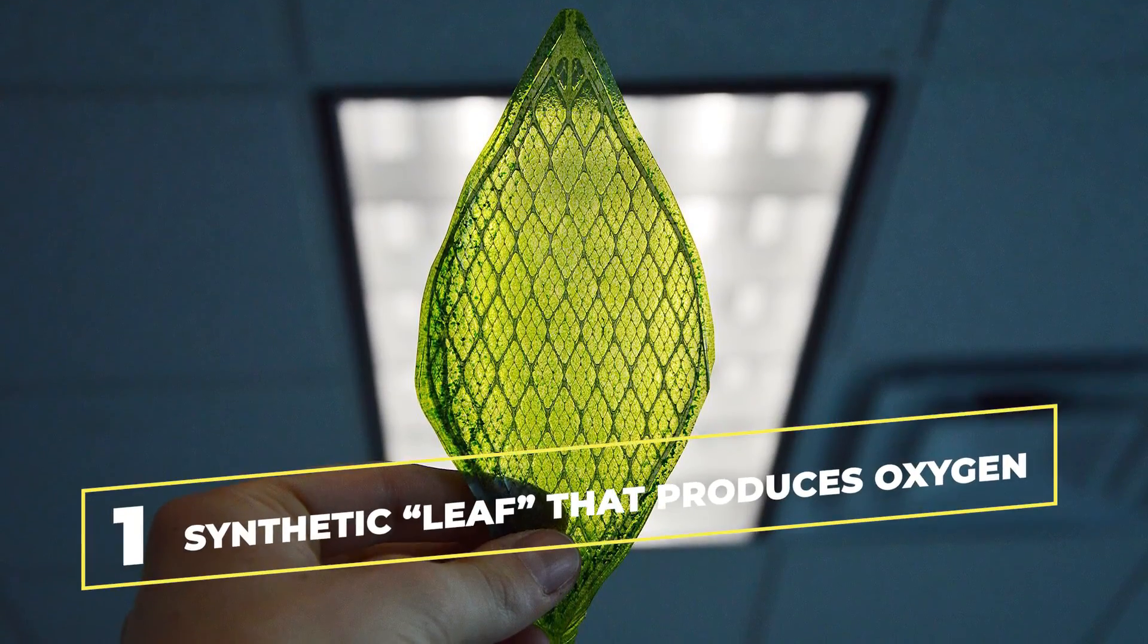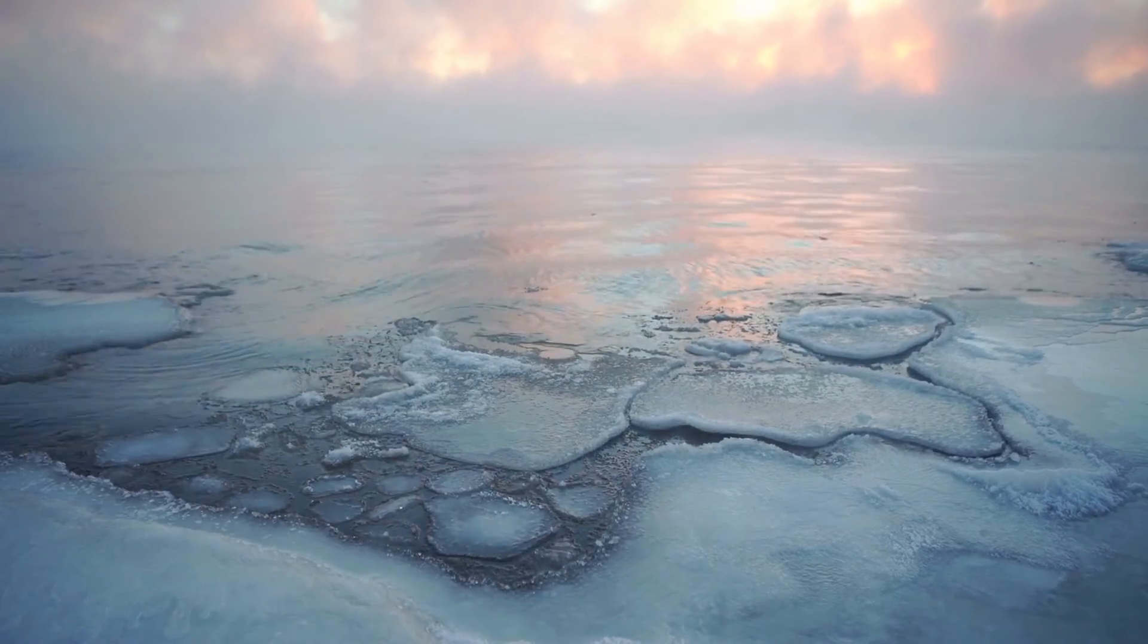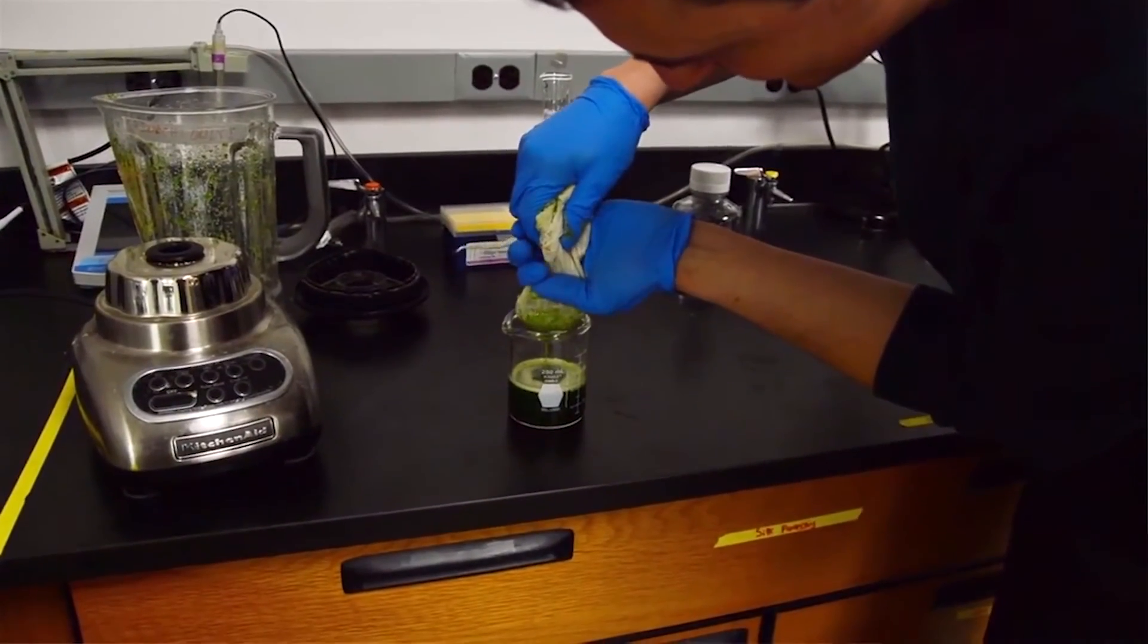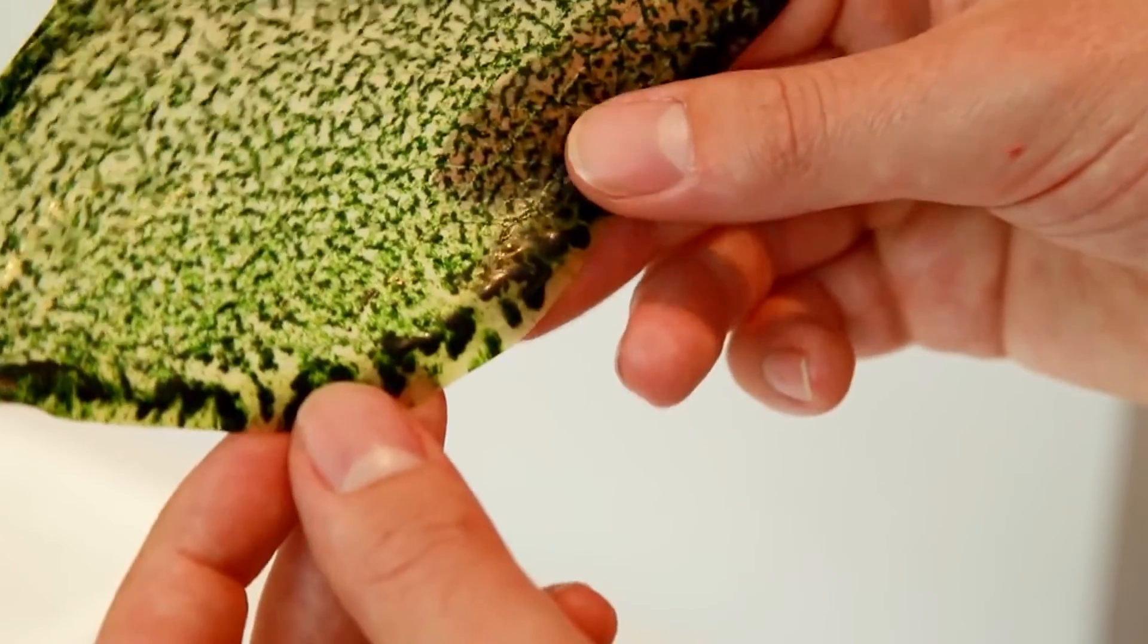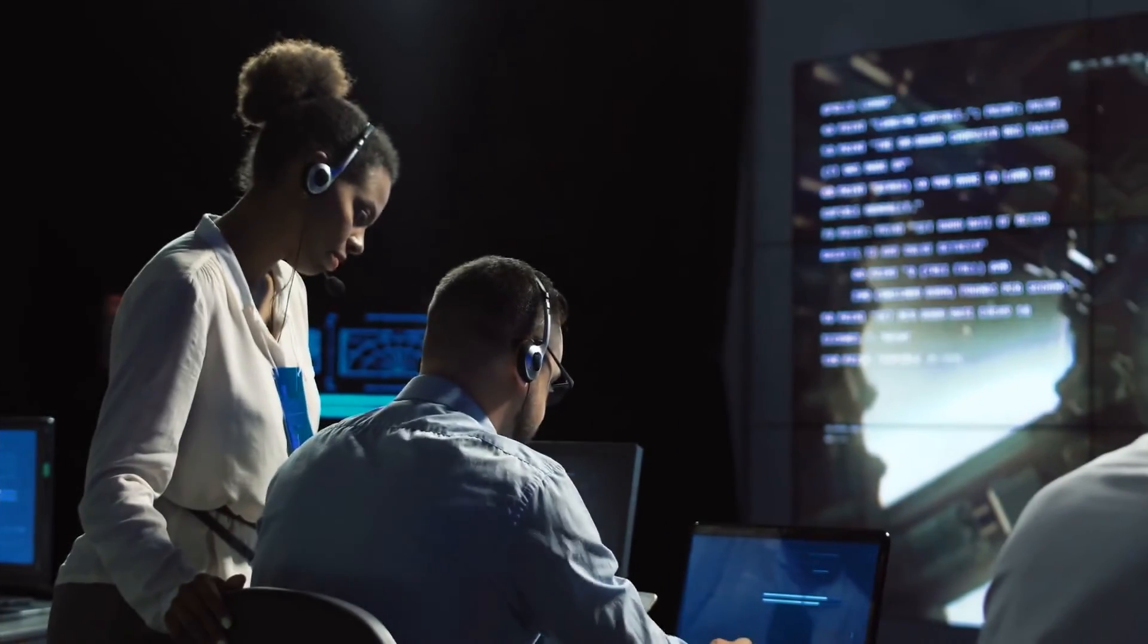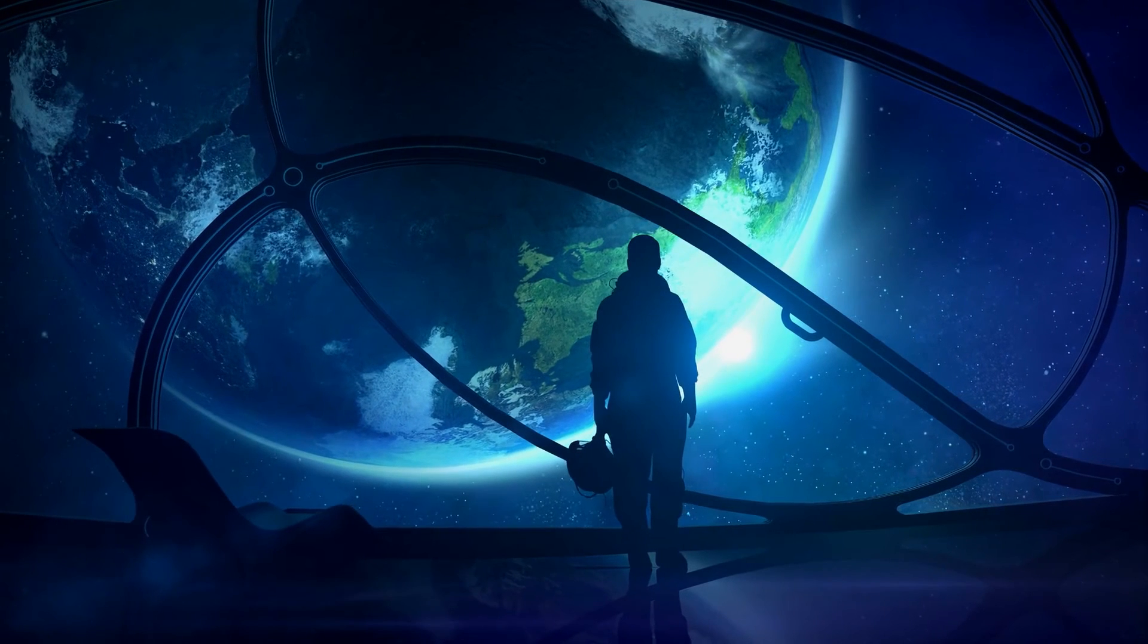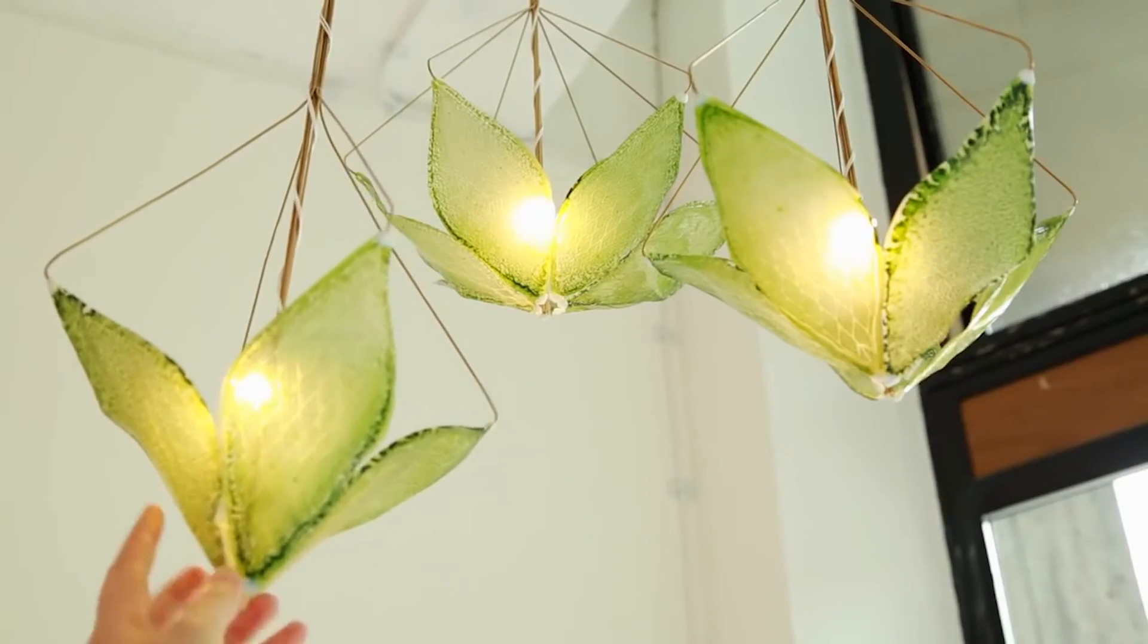And finally, at number 1, we have synthetic leaf that produces oxygen. A solution to our climate change worries. A synthetic, biological leaf formed by the suspension of chloroplasts in a silk protein matrix absorbs water and carbon dioxide to produce oxygen just like a plant and could allow long-distance space travel. With the possibility of interplanetary travel becoming a reality, NASA has been investigating ways to generate oxygen for long-distance journeys and make living in space much easier. Just like normal leaves, light and some water are required to produce oxygen.